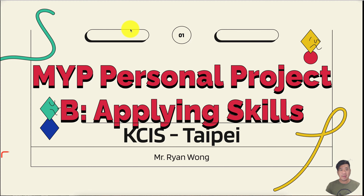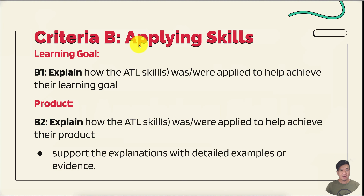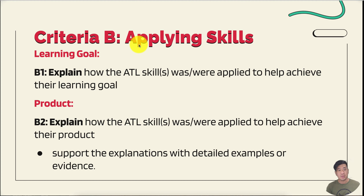Hello students. In this video, I'm going to be demonstrating the MYP Personal Project Criterion B: Applying Skills. In Criterion B, it's applying skills, which is the ATL skills. There are two goals that you are going to be working on, which is the learning goal and the product goal.